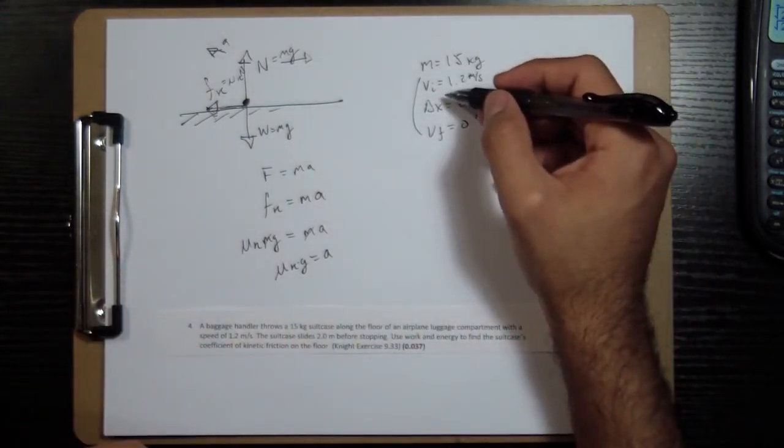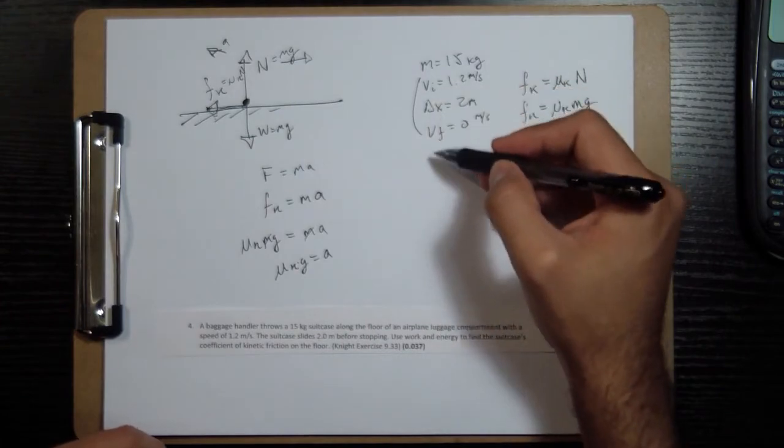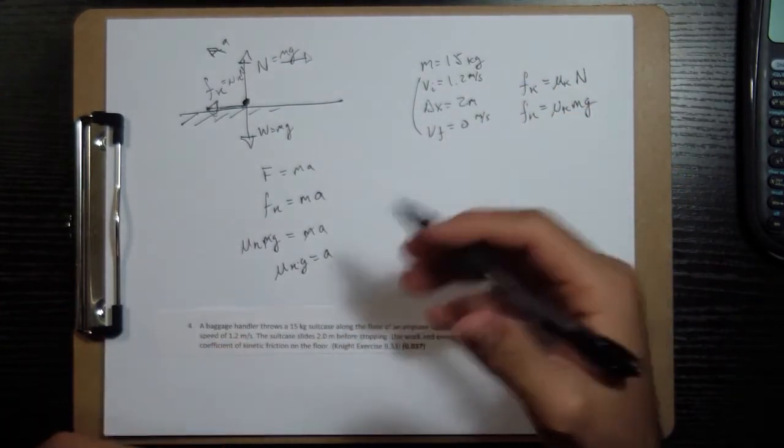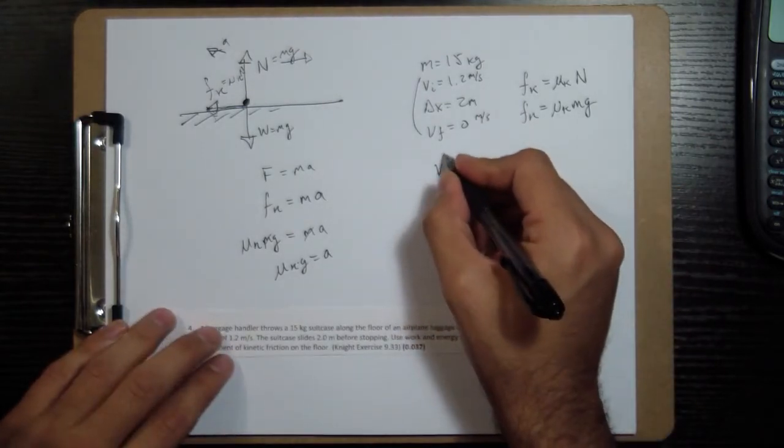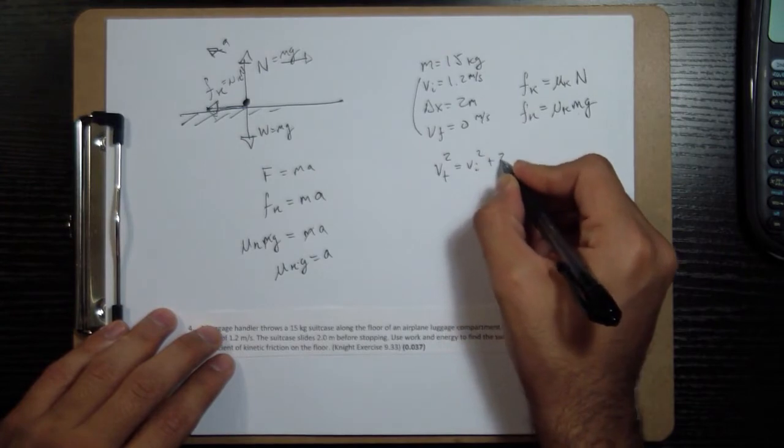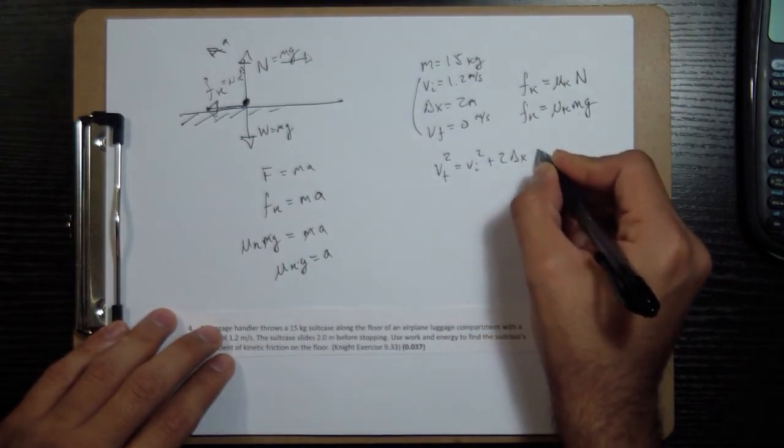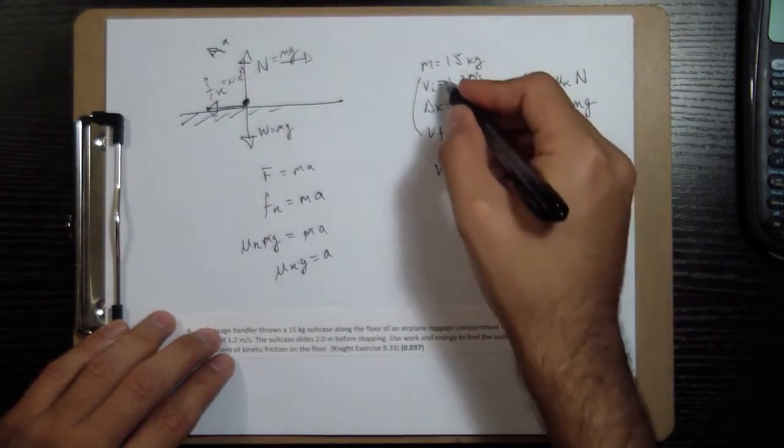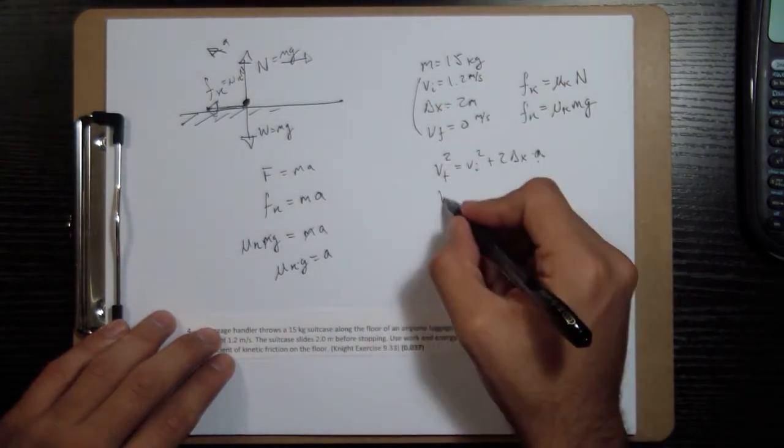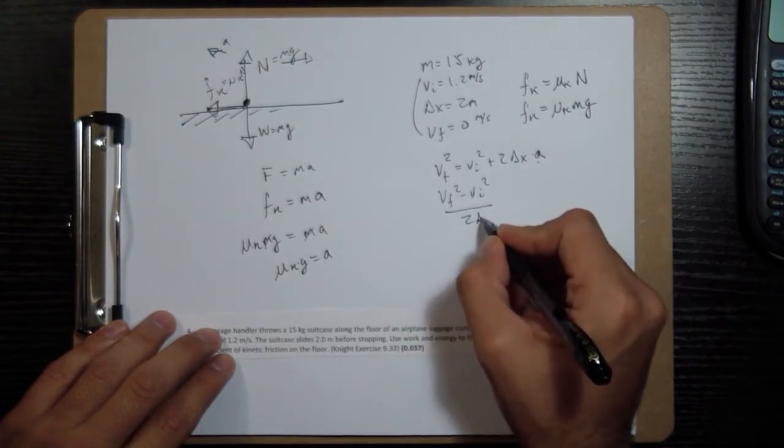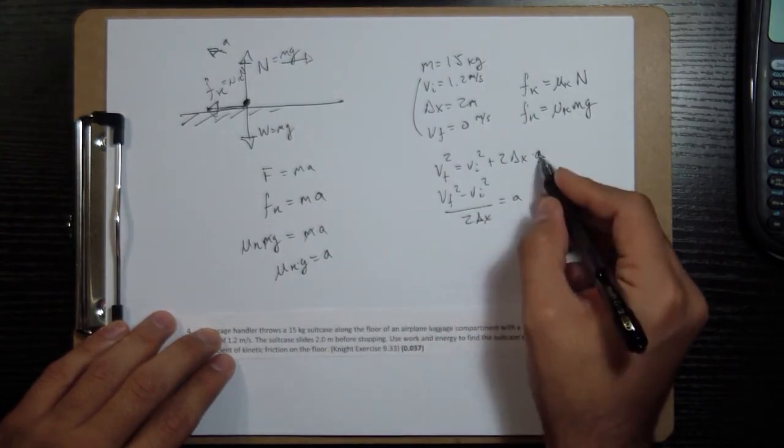So I need to find out what my acceleration is, and I can find that out from these numbers. I know velocities, I know delta x, and I'm looking for a. I'm not interested in time, so I want that equation that doesn't have any time. It's going to be v final squared is equal to v initial squared plus 2 delta x times a. So I'll have v final squared minus v initial squared over 2 delta x equals a.